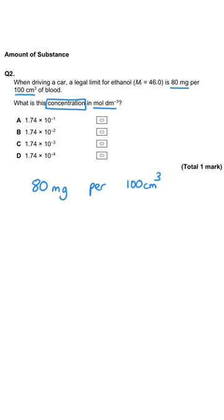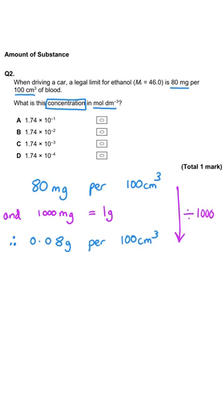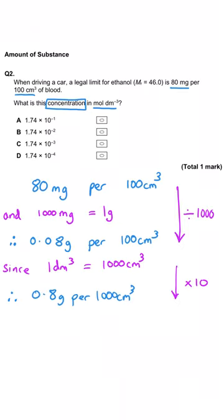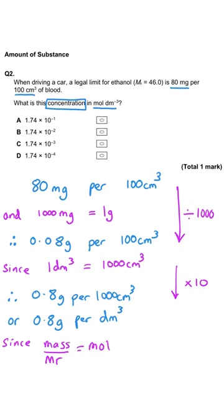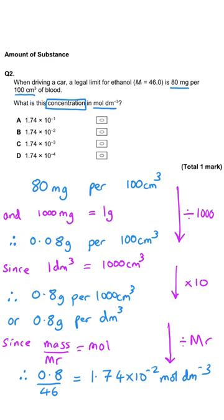We have 80 milligrams in 100 cm³ of blood, so that means it is 0.08 grams per 100 cm³. We then convert to grams per 1000 cm³, which is grams per dm³, by multiplying by 10, giving 0.8 g/dm³. Finally, we convert to moles per dm³ by dividing by the MR of 46, giving an answer of 1.74 × 10⁻² mol/dm³.